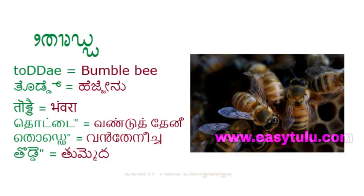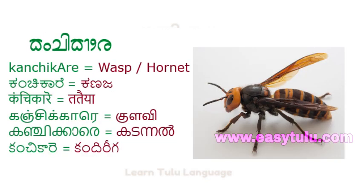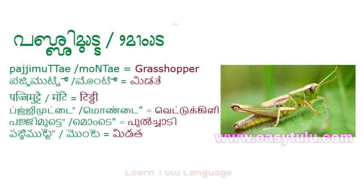Tuddae means Bumblebee. Pajjimutte means Grasshopper.